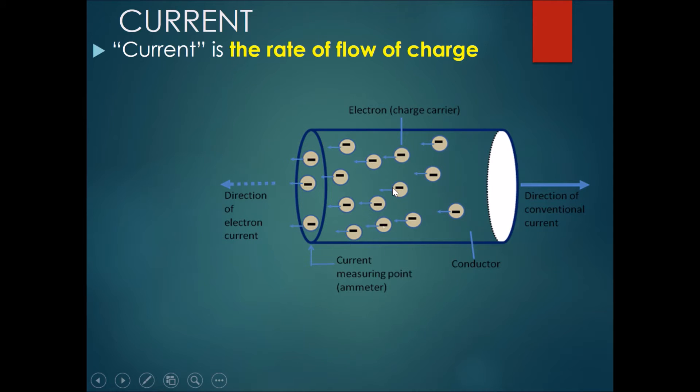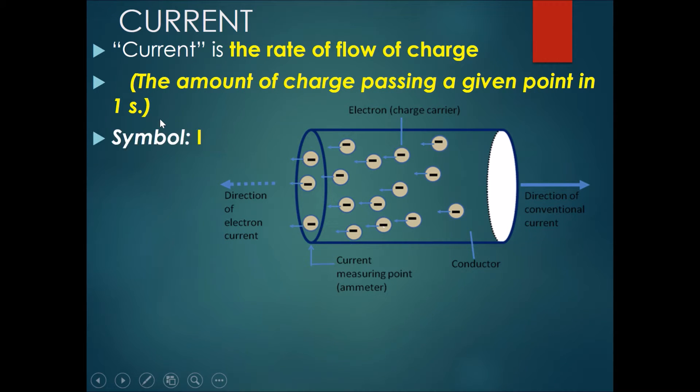So now let's talk about current. Current is the rate of flow of charge, basically the amount of charge passing a given point in one second. The symbol for it is I.